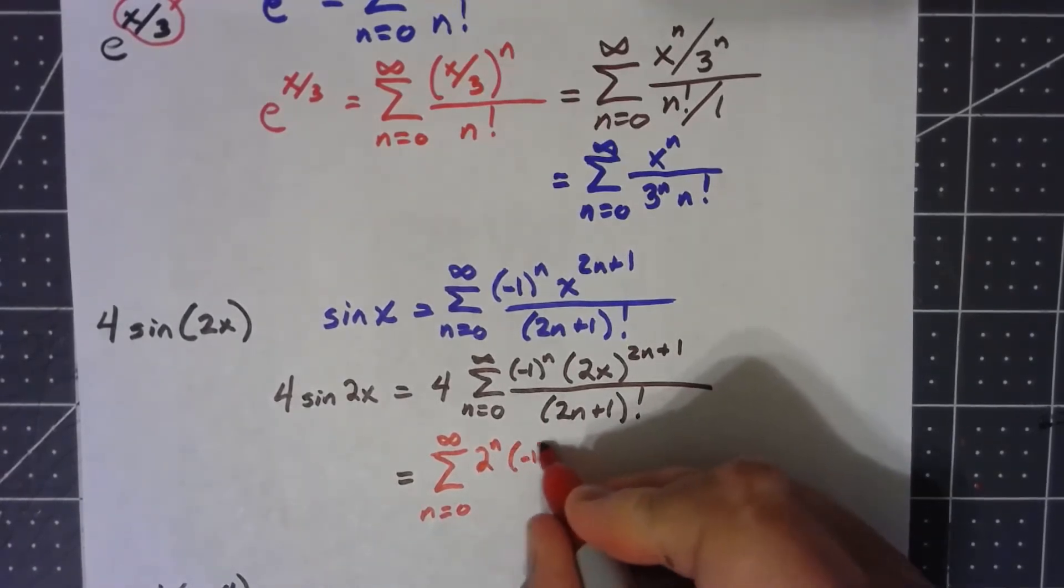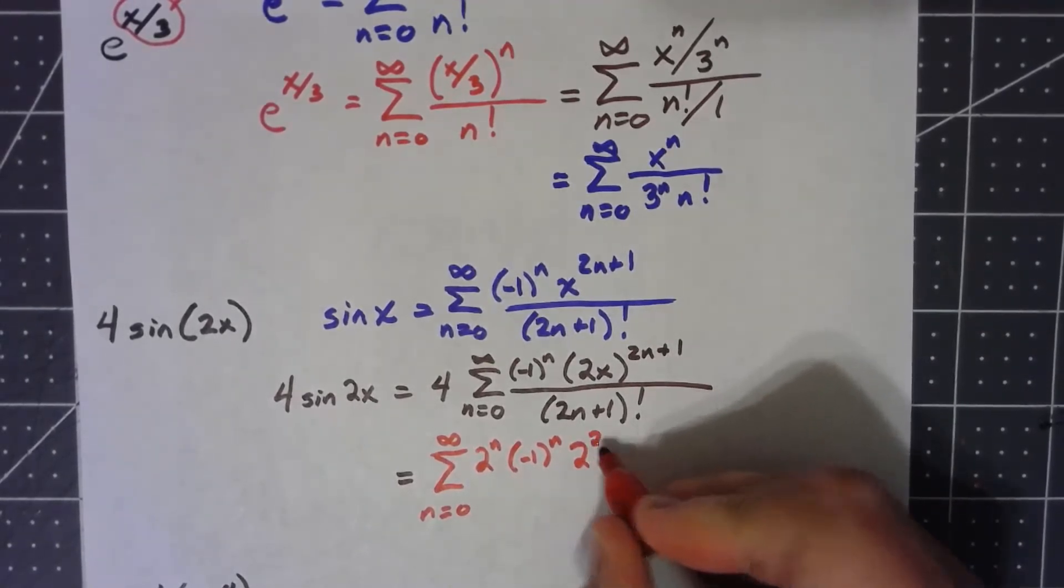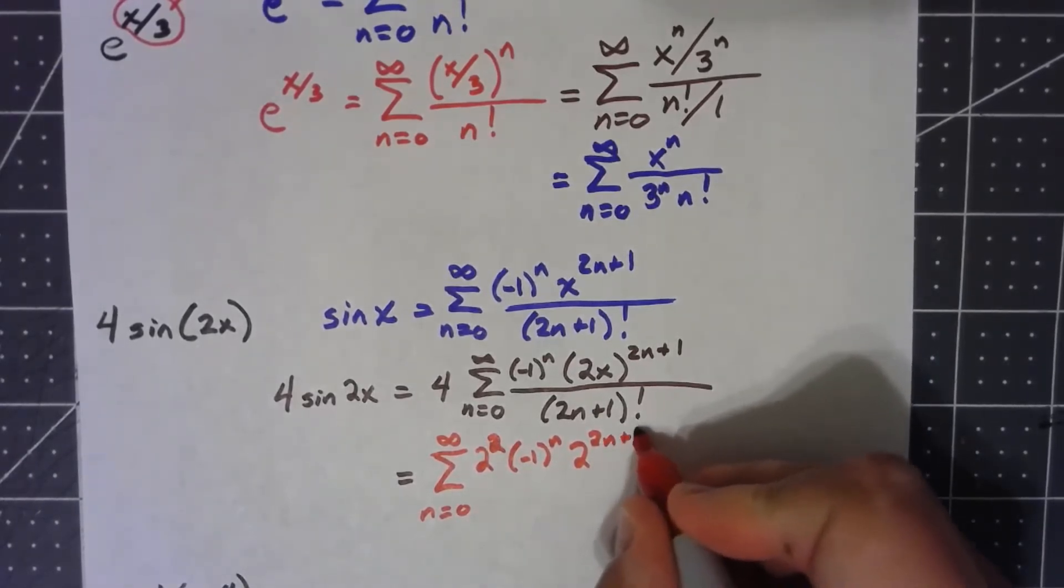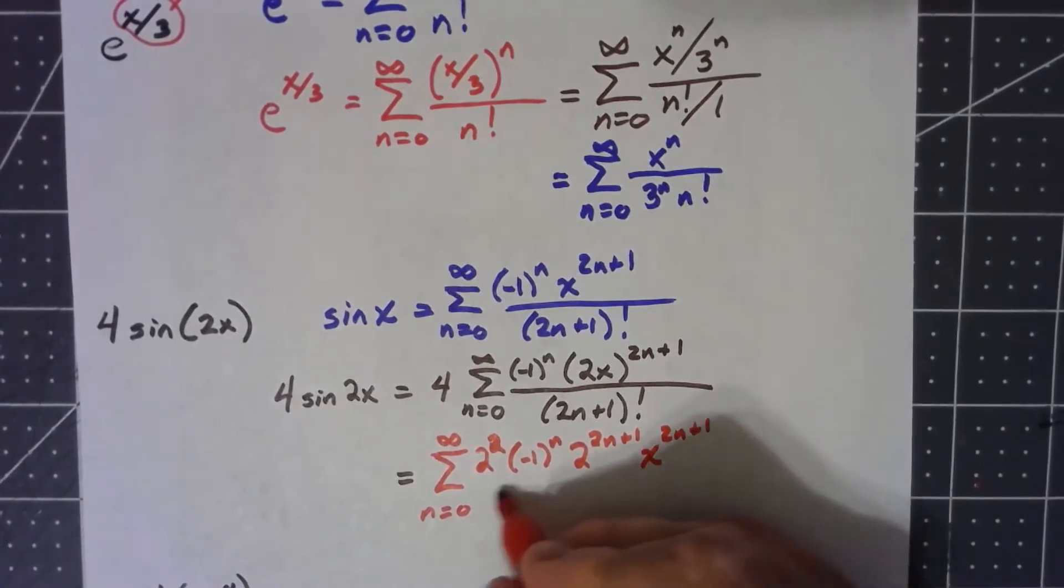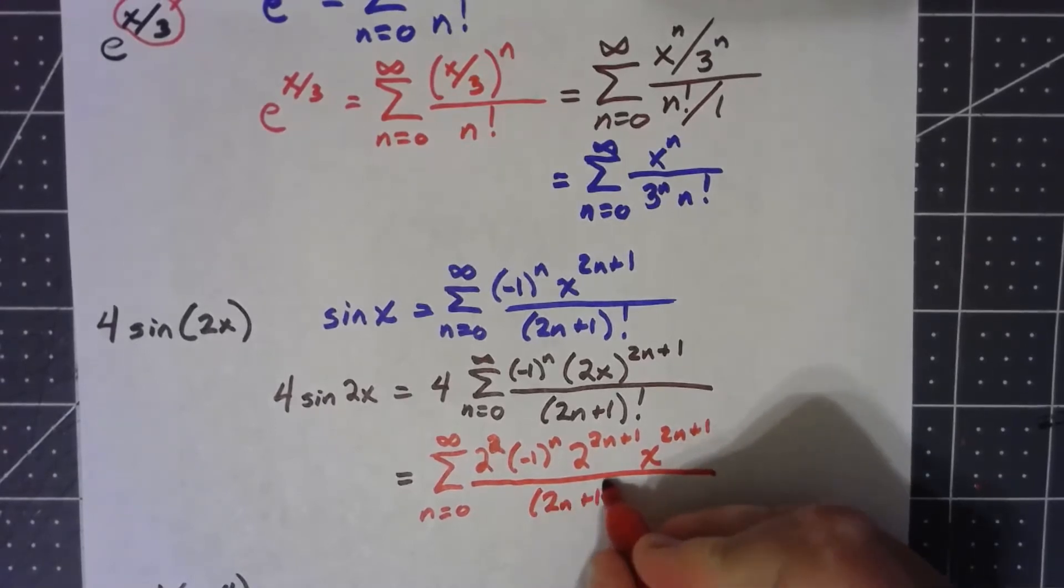I've got a negative 1 to the n. I've got a 2, actually that's a 2 squared, not a 2 to the n. I've got a 2 to the 2n plus 1. I've got an x to the 2n plus 1 over 2n plus 1 factorial.